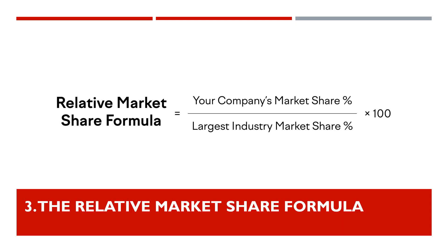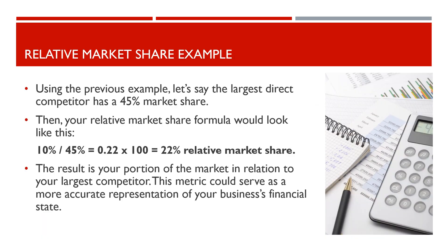Another way is to compare your performance to industry leaders. Here, you divide your market share by your top industry competitor's market share, then multiply this result by 100 to get a percentage amount. Using the previous example, let's say the largest direct competitor has a 45% market share. Then your relative market share formula would look like this: 10% divided by 45%, which equals 0.22, multiplied by 100, which equals 22% relative market share. The result is your portion of the market in relation to your largest competitor. This metric could serve as a more accurate representation of your business's financial state.